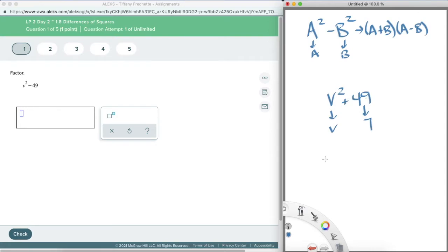If that's a plus sign, this pattern does not work. It has to be a difference of squares. So I have v and I have 7. So I'm going to have v plus 7 and v minus 7. And ta-da! I have factored it. It is all done. So let me type these in. v plus 7 and v minus 7.